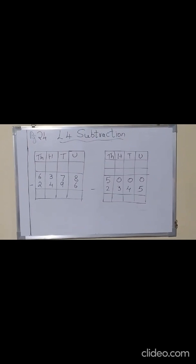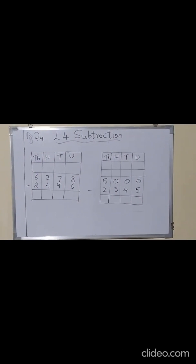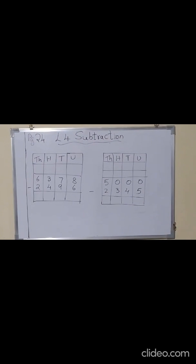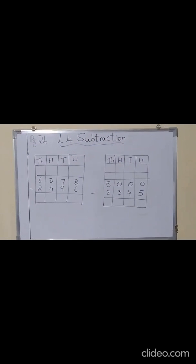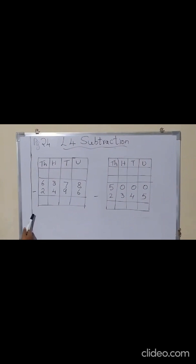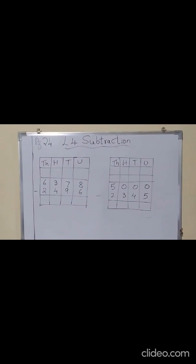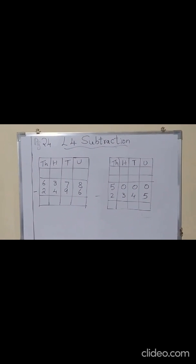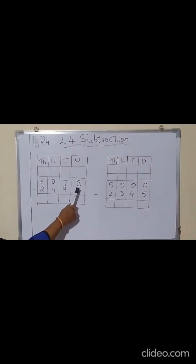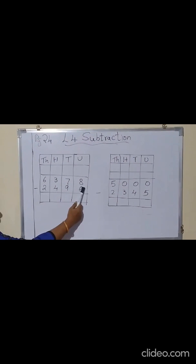Children, your Lesson number 4 is Subtraction. Subtraction means you have to take away or remove and find the answer from the given number. Now here, if you see on the board, there are two sums given. I will explain you how to do these subtraction sums. Please pay attention and listen carefully. Now, when you are doing a subtraction sum you have to start from the units place — from behind.